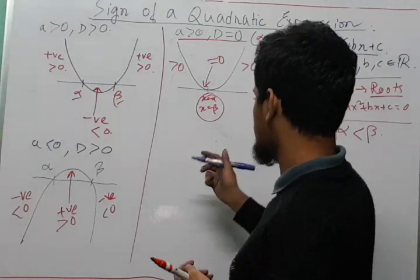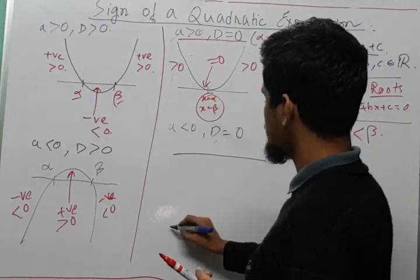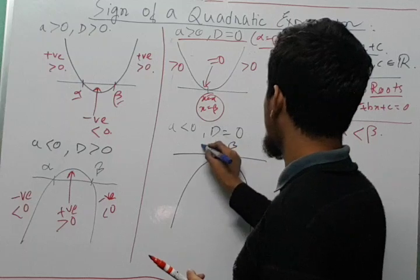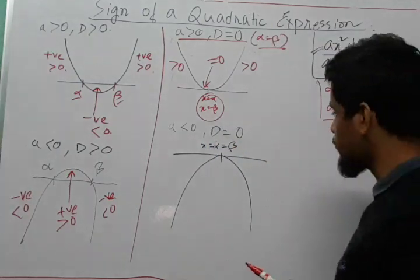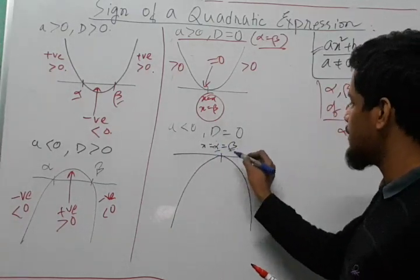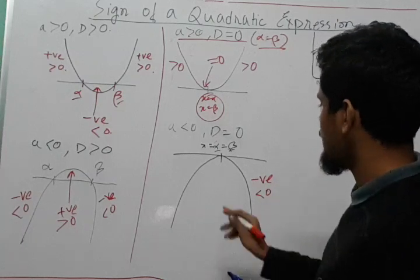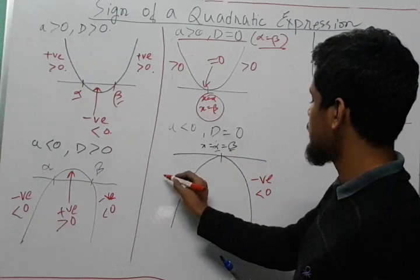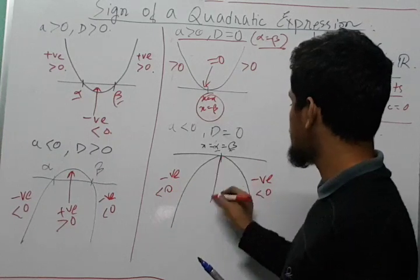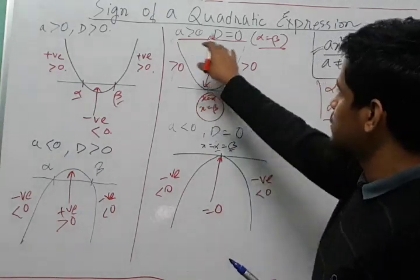The same analysis applies when a is less than 0 and D is equal to 0. Here the curve touches the x-axis and goes back down. This touching point is where alpha equals beta, and we take this as x equal to beta. If we move to the right of alpha and beta, the quadratic expression is negative — less than 0. Similarly, if we take x to the left of alpha and beta, the quadratic expression is also negative — less than 0. But at the point where x equals alpha or beta, the expression is equal to 0.